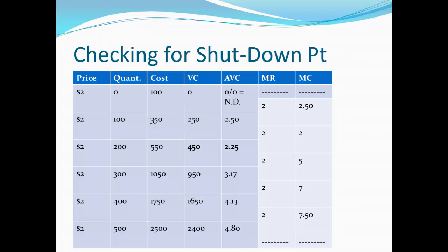That explains why at a price of $2, we should not follow the Output Rule — we should instead shut down entirely, since $2 is below our minimum average variable cost of $2.25.